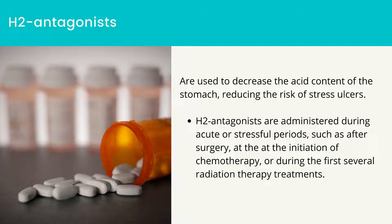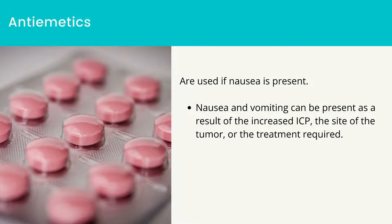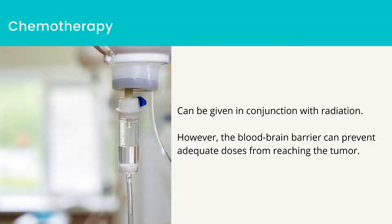H2 antagonists are administered after surgery, at the initiation of chemotherapy, or during the first several radiation therapy treatments. Antiemetics are used if nausea with or without vomiting is present. Nausea and vomiting can result from increased ICP, the site of the tumor, or the treatment required. These medications can be provided as a preventative intervention, especially when treatment is associated with nausea and vomiting. Chemotherapy can be given in conjunction with radiation; however, the blood-brain barrier can prevent adequate doses from reaching the tumor.